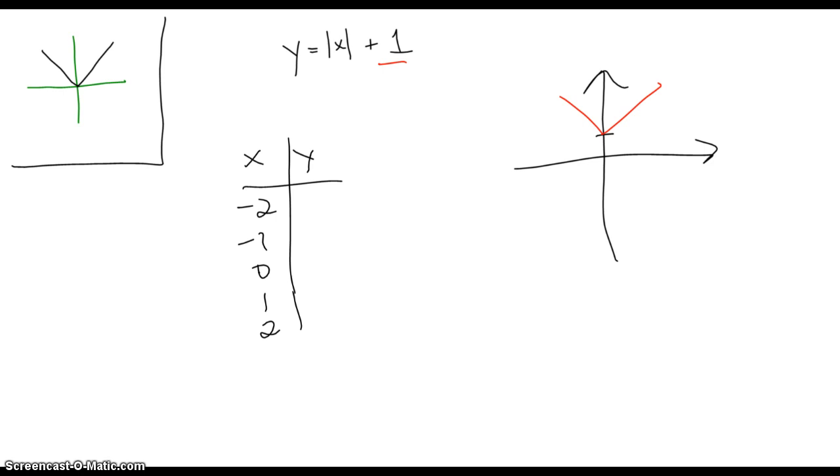Minus 2, minus 1, 0, 1, and 2. If we plug a negative 2 in, the absolute value of negative 2 is going to give us 2 plus 1, which equals 3. The absolute value of 1 plus 1 is going to give us 2. The absolute value of 0 plus 1 is going to give us 1. 1 plus 1 is going to give us 2, and 2 plus 1 is going to give us 3. So if we go back over here, let's see if that gives us what we expected. We've got the point negative 2, 3, negative 1, 2 is going to be about here. 0, 1 is going to be here. 1, 2 is going to be here. And 2, 3 is going to be here. So just using what we're thinking we know about the translation worked. It gave us the graph we were hoping.